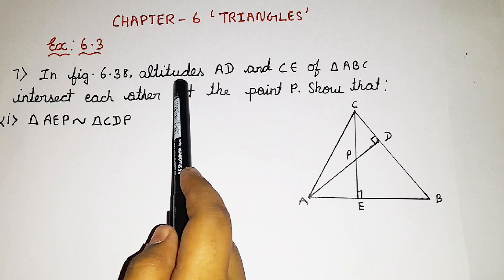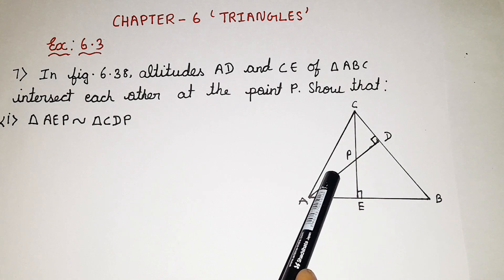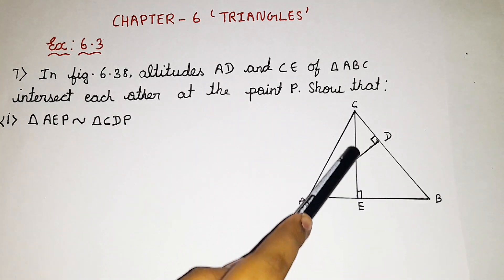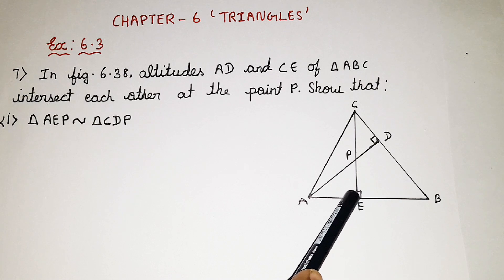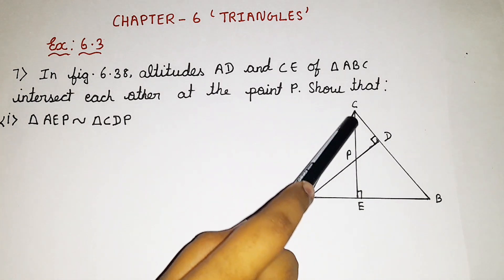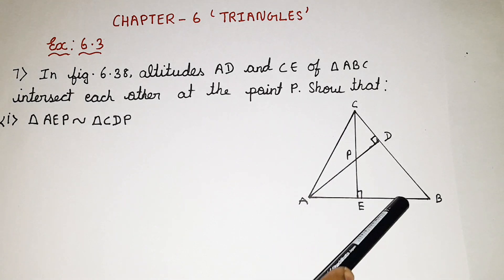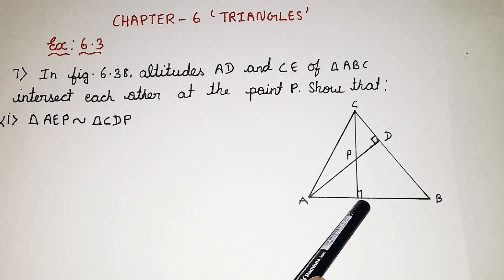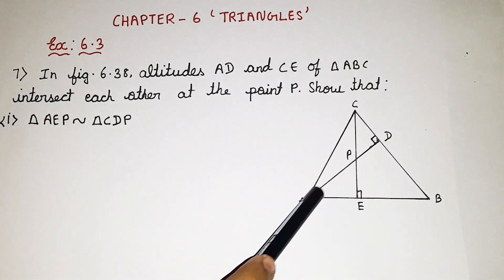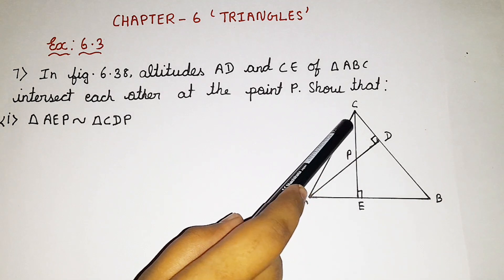There are 2 altitudes — AD and CE. So here we have AD and here we have CE. What are altitudes? Altitudes are nothing but perpendicular lines drawn from a vertex, perpendicular to the opposite side. AD here is a perpendicular line and CE here is also a perpendicular line. These two are altitudes for triangle ABC.